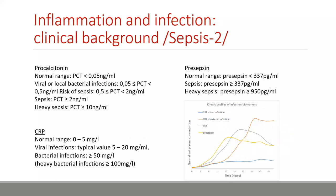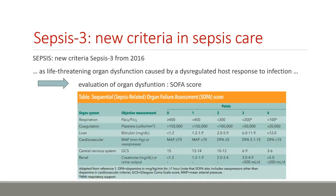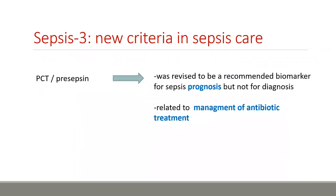There are reference ranges for CRP, procalcitonin, and presepsin, including those from Sepsis-2. CRP or procalcitonin are used to diagnose bacterial infections according to guidelines for neonatal or pediatric care. Specifically, CRP over 15 mg/L or procalcitonin over 2 ng/mL. New criteria for sepsis care according to Sepsis-3 are used to calculate the SOFA score for evaluation of organ dysfunction. This score does not involve CRP, procalcitonin, or presepsin. Procalcitonin and presepsin are not used for the diagnosis of sepsis according to Sepsis-3 but are recommended for prognosis, or can be used to differentiate bacterial and viral infections to manage antibiotic treatment.